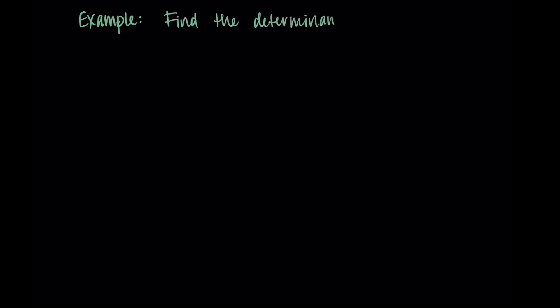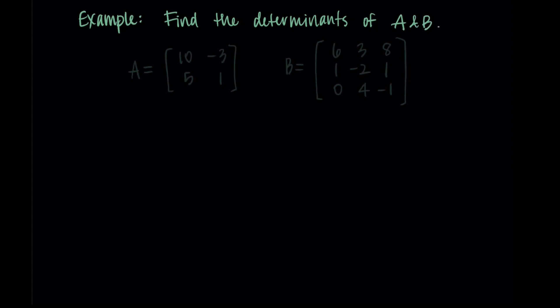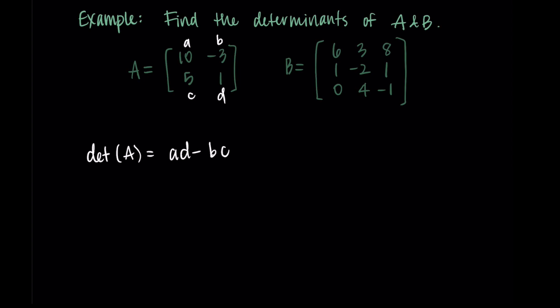Let's find the determinants of matrices A and B, where A is a 2 by 2 matrix with columns 10, 5 and negative 3, 1, and B is a 3 by 3 matrix with columns 6, 1, 0 and 3, negative 2, 4 and 8, 1, negative 1. Starting with A, the determinant takes AD minus BC, so that's 10 times 1 minus negative 3 times 5. Simplifying: 10 plus 15, which is 25. So the determinant of A is 25.